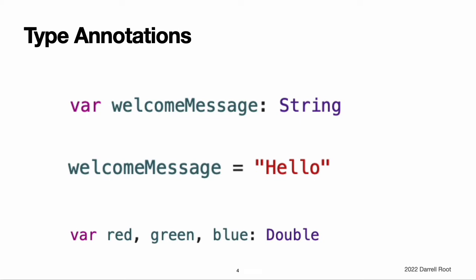Type annotations. You can provide a type annotation when you declare a constant or variable to be clear about what kind of values the constant or variable can store. Write a type annotation by placing a colon after the constant or variable name, followed by a space, followed by the name of the type to use. This example provides a type annotation for a variable called welcome message to indicate that the variable can store string values. The colon in the declaration means "of type," so the code above can be read as: declare a variable called welcome message that is of type String. You can define multiple related variables of the same type on a single line separated by commas with a single type annotation after the final variable name.